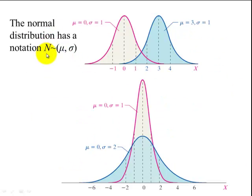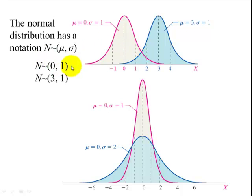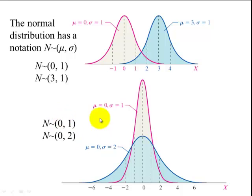This is the shorthand for writing a normal distribution. The N means it's normal; we put the mean first and then the standard deviation. For these two cases, they have the same standard deviation but different means — this notation applies to the pink one and to the blue one. For the two distributions below, when you increase the standard deviation there is more spread. Both are centered at zero, so the notation for the pink one is N(0,1) and for the blue one is N(0,2).